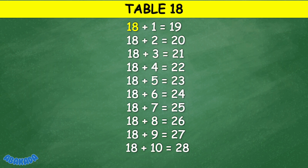Table 18: 18 plus 1 equals 19, 18 plus 2 equals 20, 18 plus 3 equals 21, 18 plus 4 equals 22, 18 plus 5 equals 23, 18 plus 6 equals 24, 18 plus 7 equals 25, 18 plus 8 equals 26.